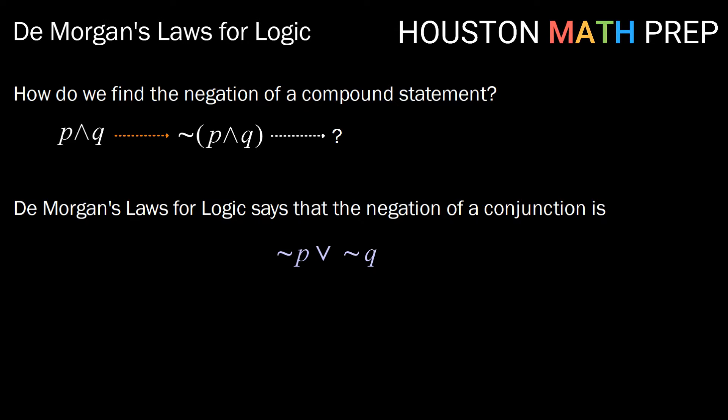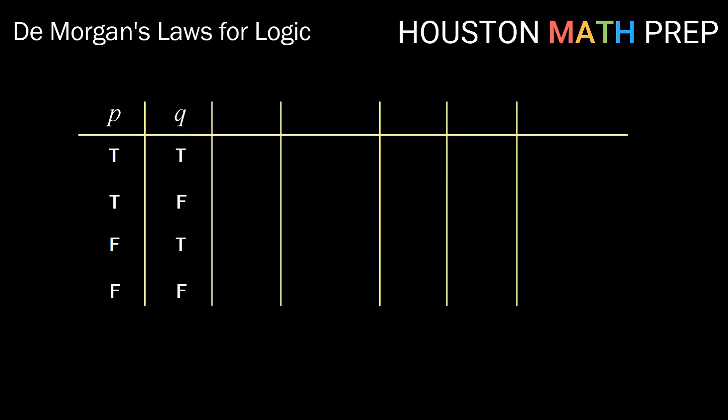Let's explore that by creating the truth table. If we start with P and Q in our usual true, true, false, false, true, false, true, false organization, the next thing we can create is the truth table for P and Q. We know that P and Q is only true when both P and Q are true and false everywhere else.